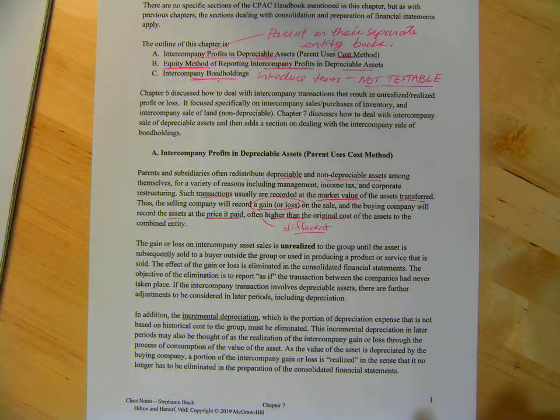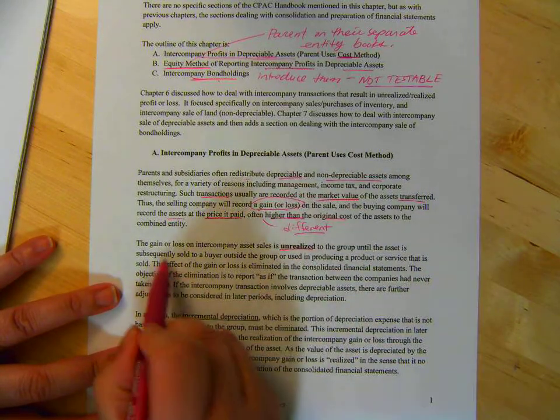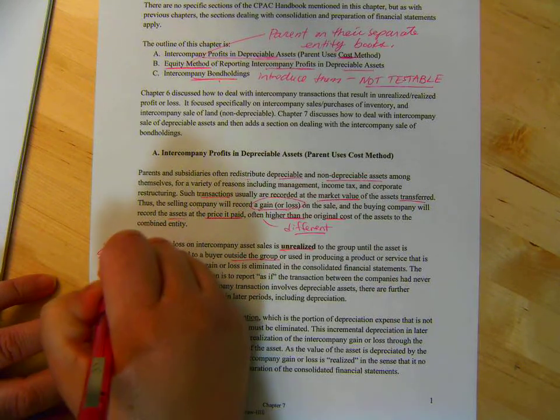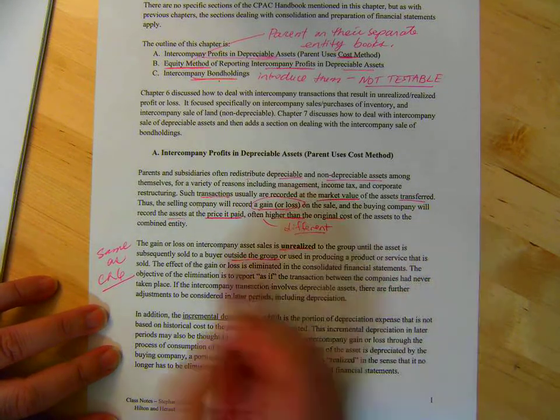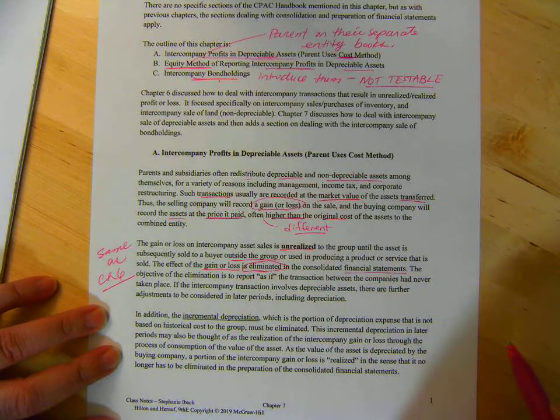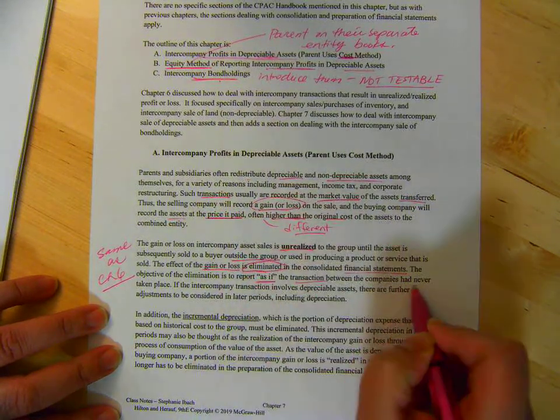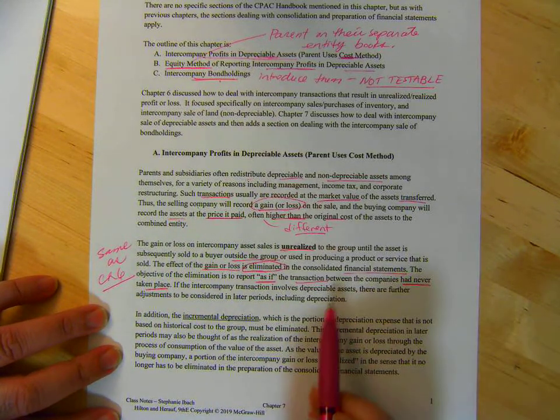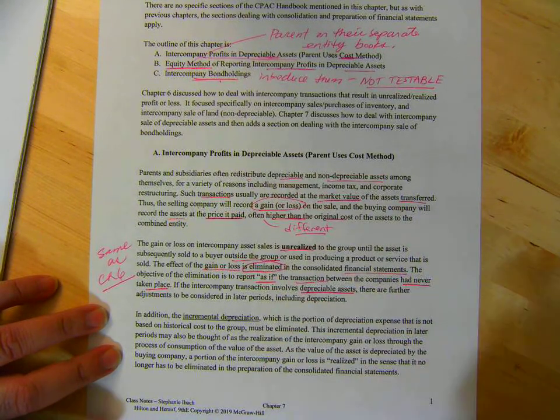The gain or loss on intercompany asset sales is unrealized to the group until the assets subsequently sold to the buyer outside the group. This is the same as Chapter 6. Everything we told in Chapter 6 applies here. So, we need the effect of the gain or loss to be eliminated in the consolidated financial statements. We have to report as if the transaction between the companies has never taken place. We've done that with inventory, we've done that with land.